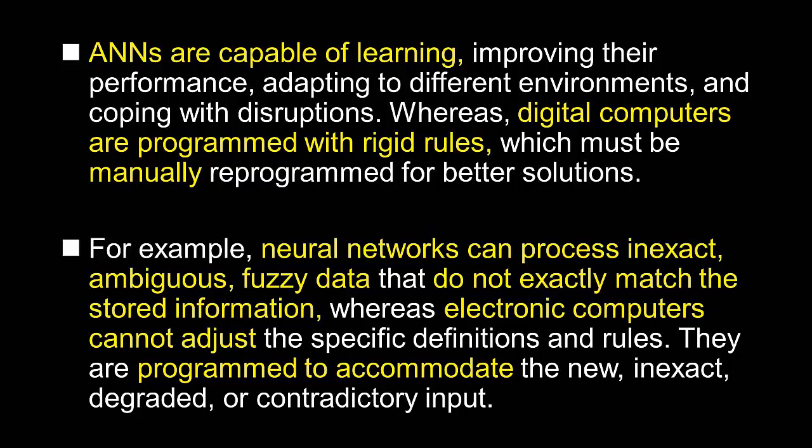For example, neural networks can process inexact, ambiguous, fuzzy data that do not exactly match the stored information, whereas electronic computers cannot adjust their specific definitions and rules. They must be reprogrammed to accommodate new, inexact, degraded, or contradictory input.